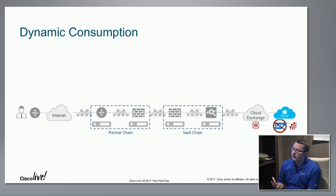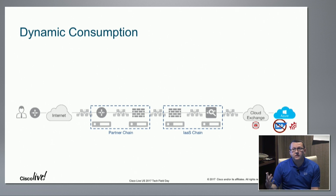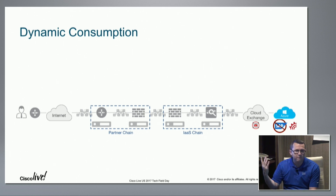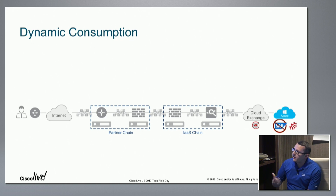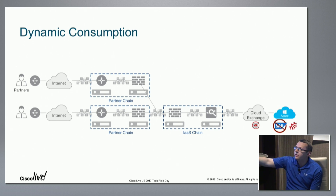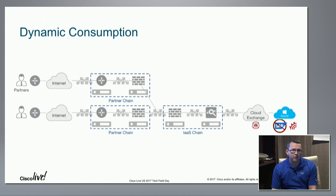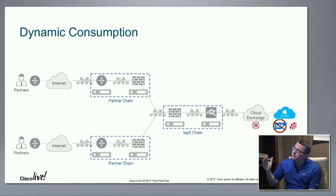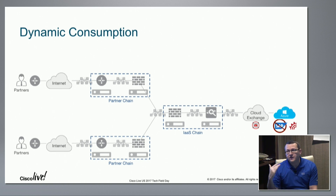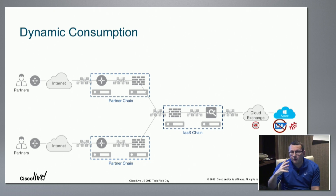Let's talk about the benefits of doing this with SAE. One thing that changes often in enterprise DMZs is connectivity to partners — you're constantly onboarding and offboarding. Previously that meant spinning up VRFs, VLANs, adding contexts on firewalls, mixing ACLs into the same firewall — it becomes messy very quickly. Instead, imagine simply adding a new service chain for each partner. When you offboard, the ACLs and policies applied to that specific partner stay with that service chain. When you want to destroy those VMs, you blow them up and walk away.